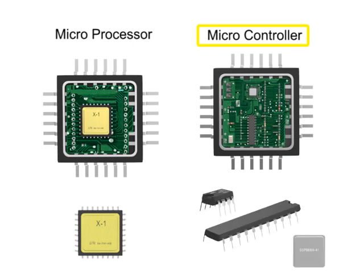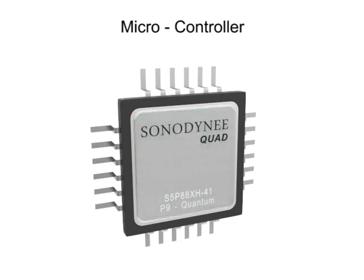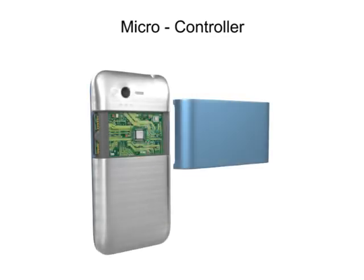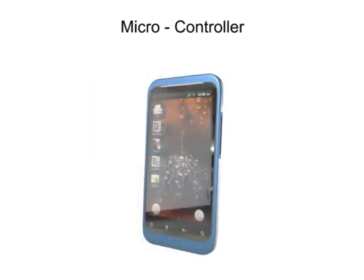In general, microprocessors are used to perform a wide range of computing operations, while a microcontroller, with its all-in-one design, performs specialized tasks required for devices, such as a smartphone.